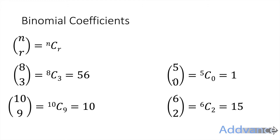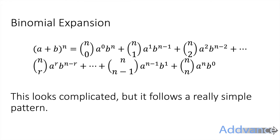There are some nice patterns: anything choose zero will always be one. And 10 choose 9 equals 10 itself — in general, n choose (n−1) equals n. For example, 5 choose 4 is also 5. Now the binomial expansion uses these coefficients along with a specific formula.